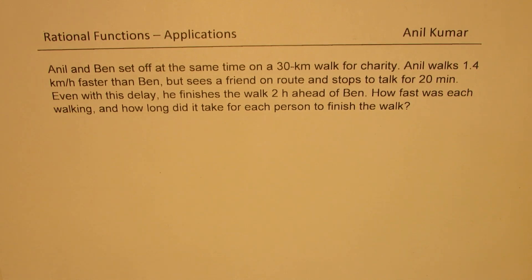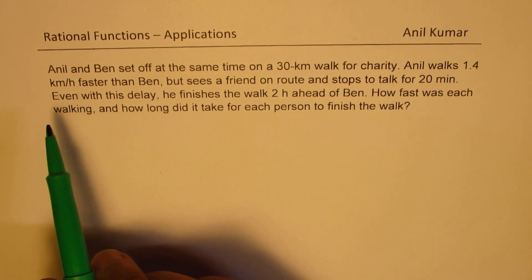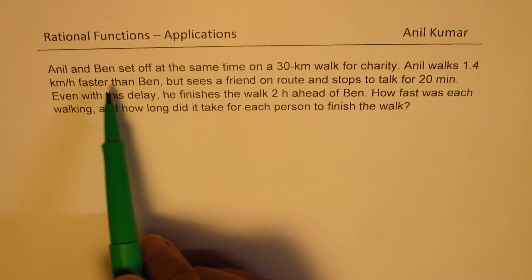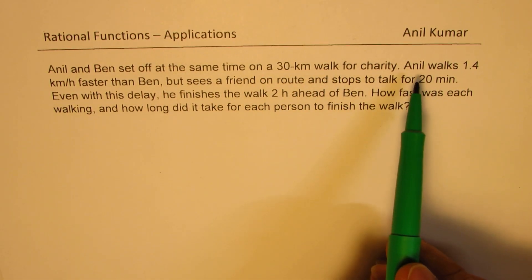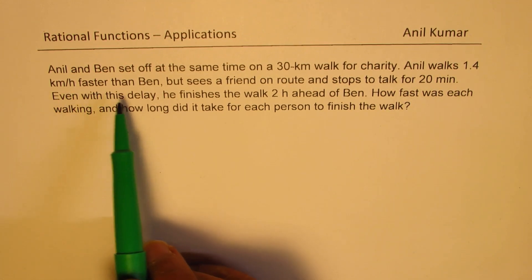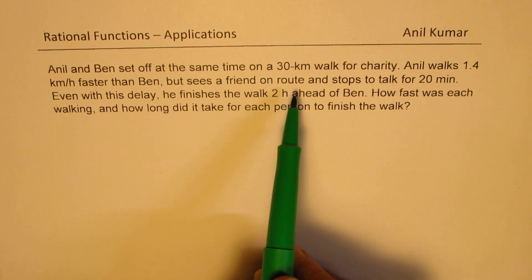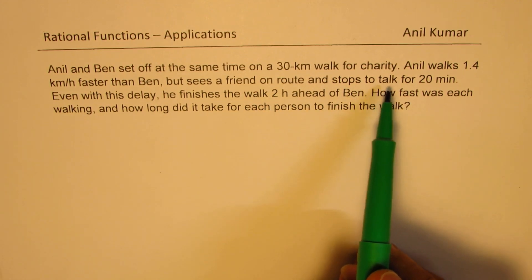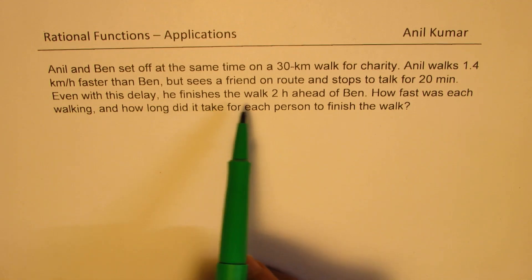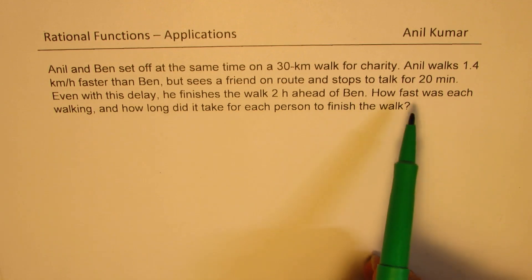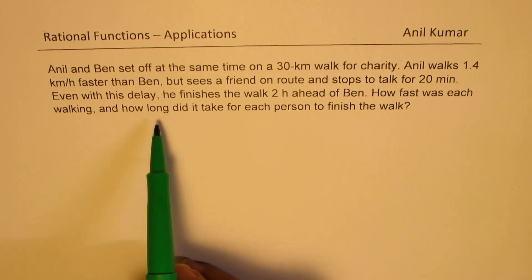This is an application on rational functions and it is a very important question from test point of view. The question names have been changed. The question is: Anil and Ben set off at the same time on a 30 kilometer walk for charity. Anil walks 1.4 kilometers per hour faster than Ben but sees a friend on route and stops to talk for 20 minutes. Even with this delay, he finishes the walk two hours ahead of Ben. How fast was each walking and how long did it take for each person to finish the walk?